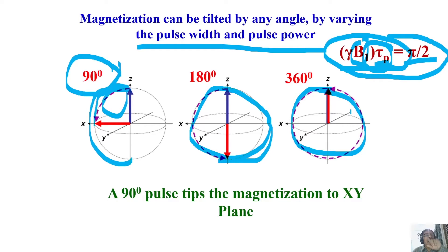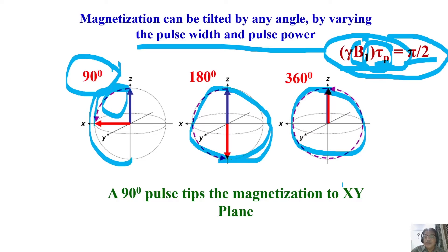You can make the magnetization rotate in the X-Z plane. The direction of tilting follows the right-hand thumb rule — the thumb points in the axis of application of the pulse, and the curly fingers indicate the direction in which the magnetization is going to be tilted. You can manipulate the magnetization to rotate in any plane and any direction you want by choosing the pulse angle and power appropriately.